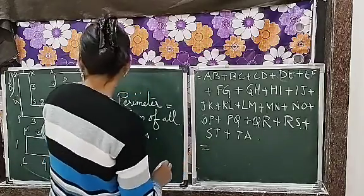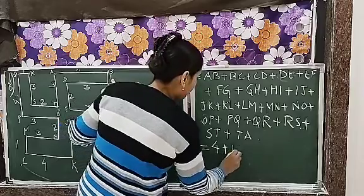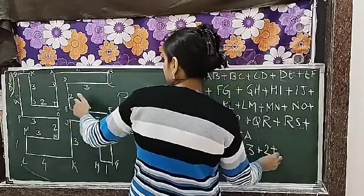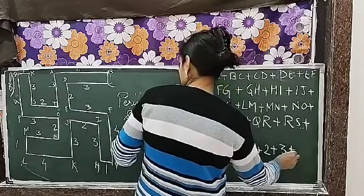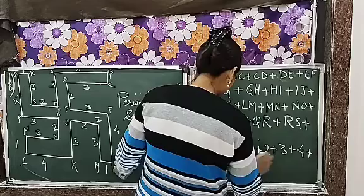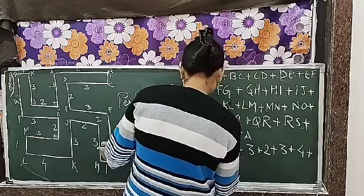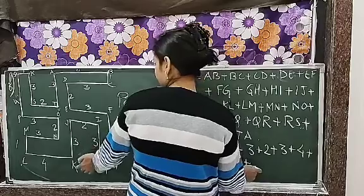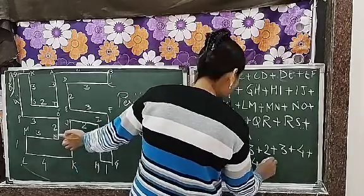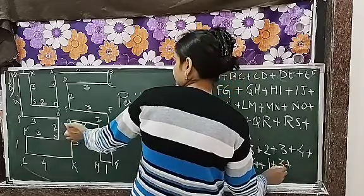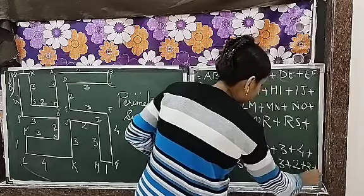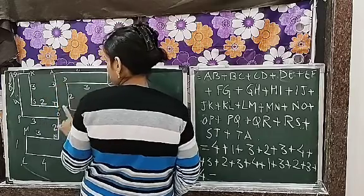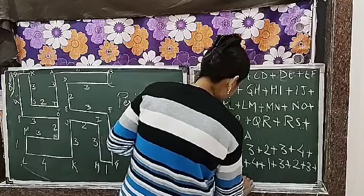Now starting with AB, that is 4 centimeter plus 1 centimeter plus 3 centimeter plus 2 centimeter plus 3 centimeter plus 4 centimeter plus 1 centimeter plus 3 centimeter plus 2 centimeter plus 3 centimeter plus 4 centimeter plus 1, plus 3, plus 2, 3, 4, 2, 3, 4. My God. 2, 3, 4 and then 1, 2, 3, 1, 2, 3.